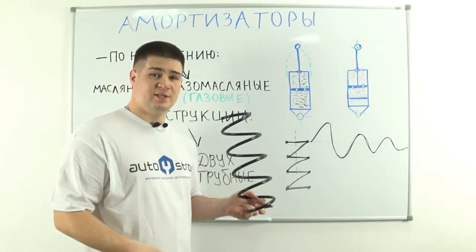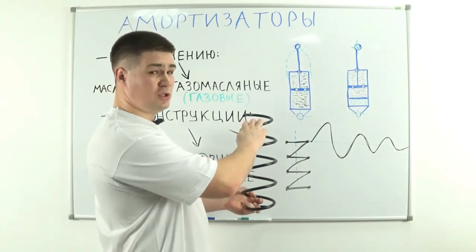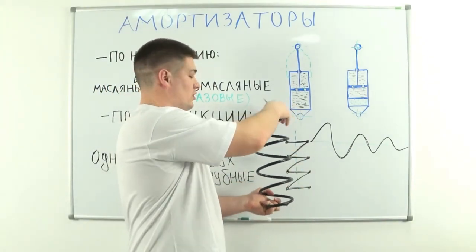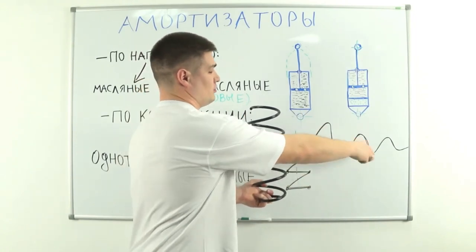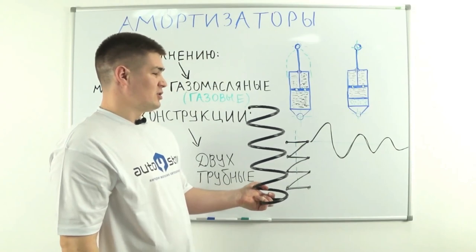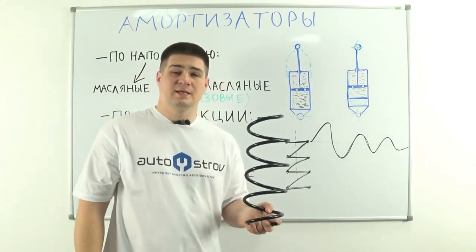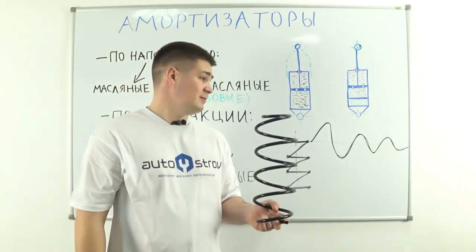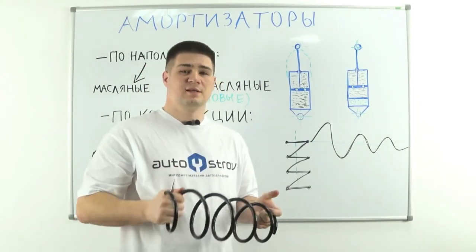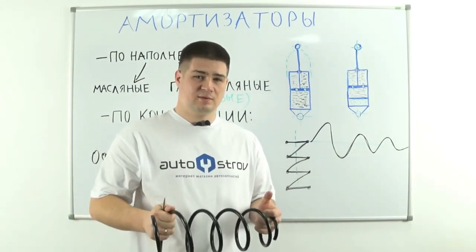This can be depicted on the board with the following graph. This is my spring. Here it is on the board. And when the spring is acted upon, oscillations in the vertical plane occur. They are damped oscillations. This creates at least discomfort when driving, but the most important thing is that situations may arise when the wheel comes off the surface and you lose control of the car.